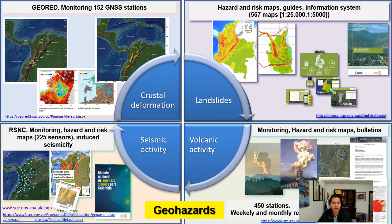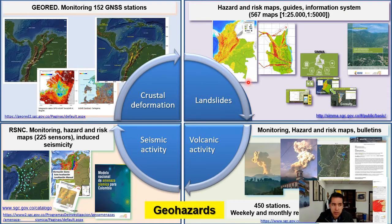In this geohazard direction, we focus on four geohazards: landslide, volcanic activity, seismic activity, and crustal deformation. Each one of these geohazards has different roles and different relationships with different partners and organizations related to hazard and risk reduction in Colombia. I will show how each one of these geohazards has those relations.